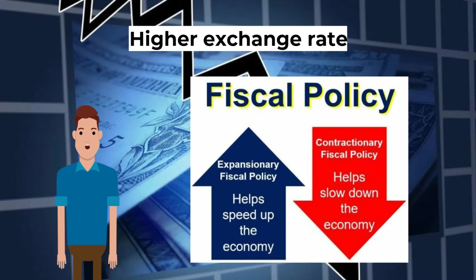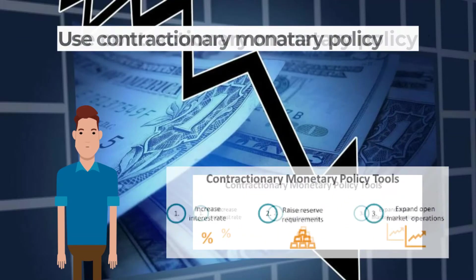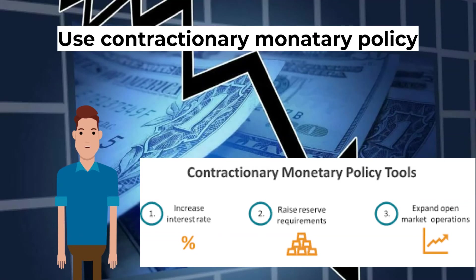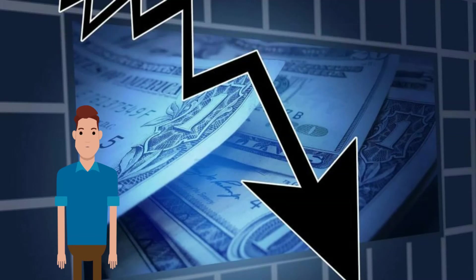Use contractionary fiscal policy: a government can cut public expenditure and increase taxes to reduce total demand, which will reduce demand for imports and improve the trade balance. However, a fall in demand may cause firms to cut output and employment. Use contractionary monetary policy: higher interest rates will attract more direct inward investment, nullify the trade deficit, make borrowing more expensive, and increase the incentive to save, discouraging consumers from spending.